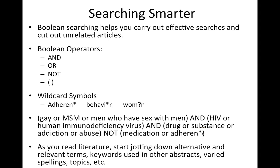As you read the literature, start jotting down alternative and relevant terms. Google is now doing query suggestions, which will suggest other terms and searches for you. You'll get a sense of keywords used in abstracts, varied spellings, and topics that might be related but not exactly what you're interested in — and that may help give you a better sense of the literature and how it fits into the broader context.